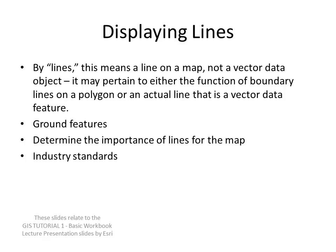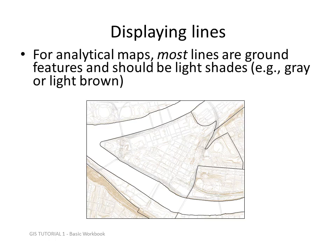We can display lines as ground features, and we want to determine the importance of lines for the map. There are also industry standards to consider when depicting lines. For analytical maps, most lines are ground features and should be light shades of gray or light brown. In this example, you can see a section of downtown Pittsburgh with Point Park at the edge of the triangle, and the streets are rendered in ground.